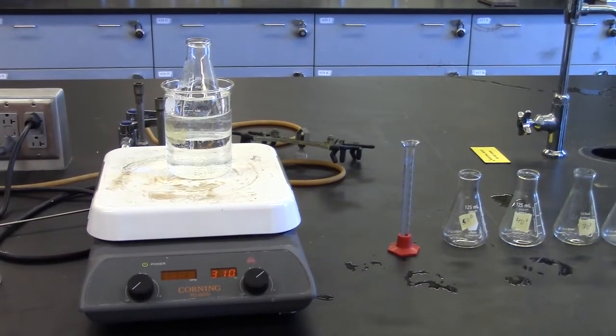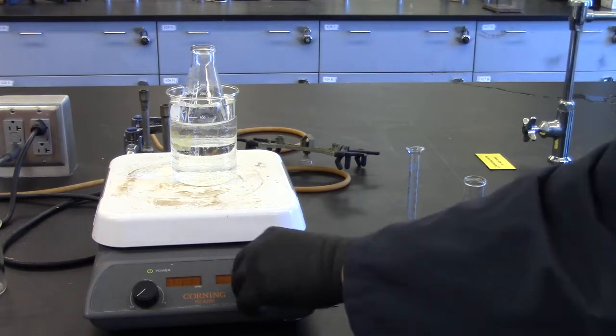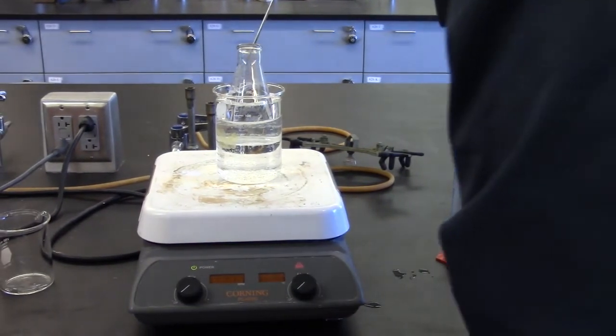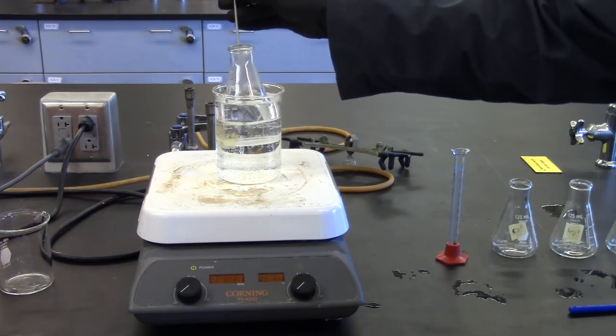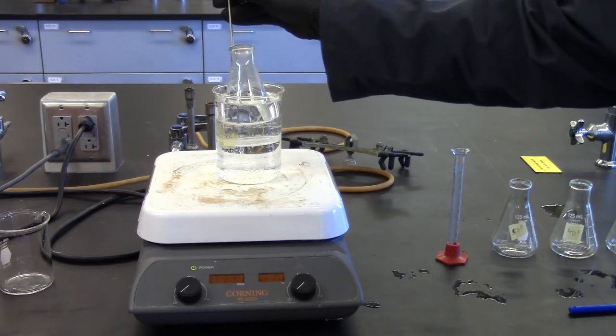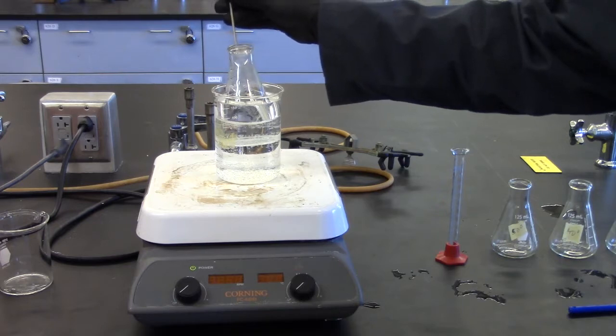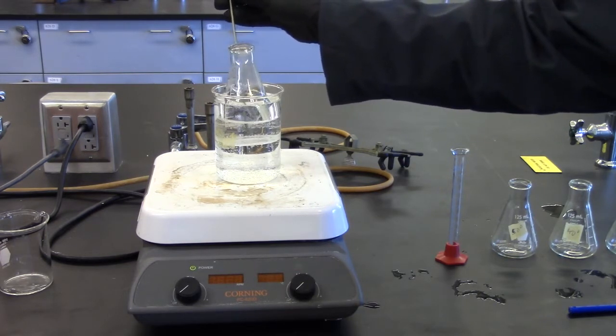For this next part, you will use the main flask that contains the dissolved borax. Turn off the hot plate and place the thermometer into the main flask. Leave the flask in the bath and allow the temperature to drop slowly to 52 degrees, stirring constantly. Once the temperature has reached 52 degrees, stop stirring and allow the solid to settle on the bottom of the flask.